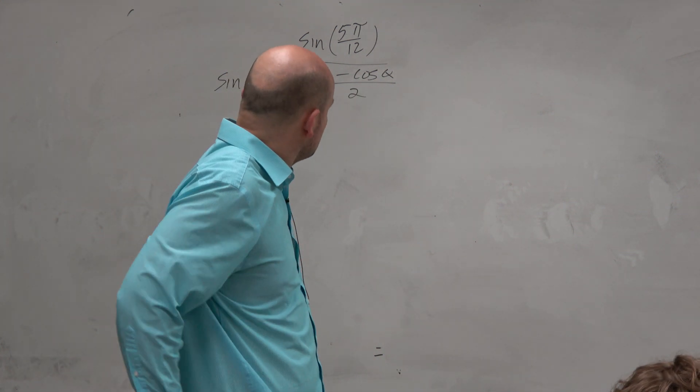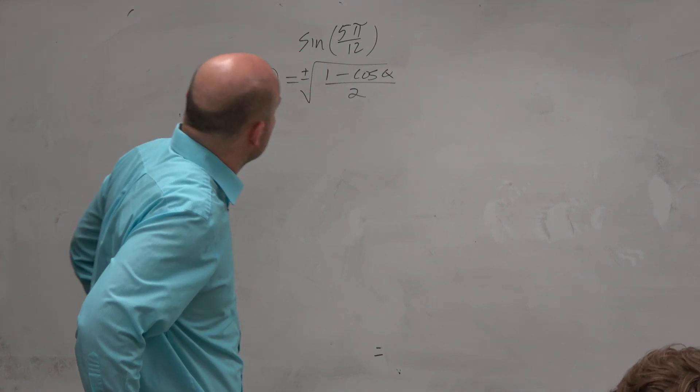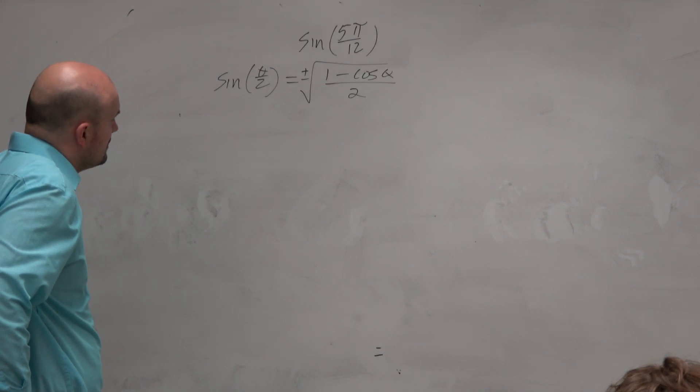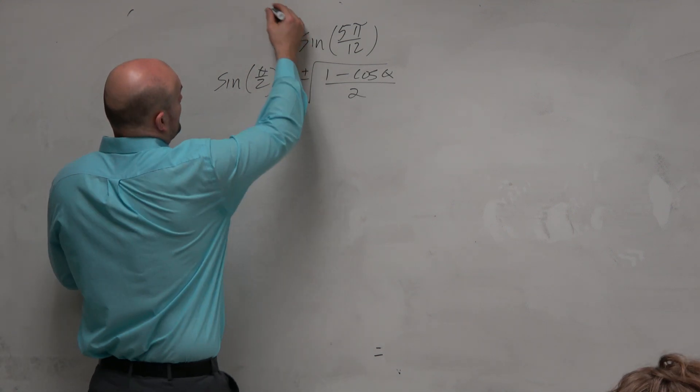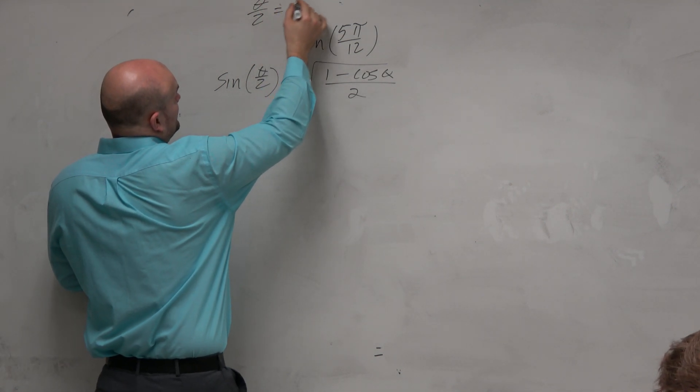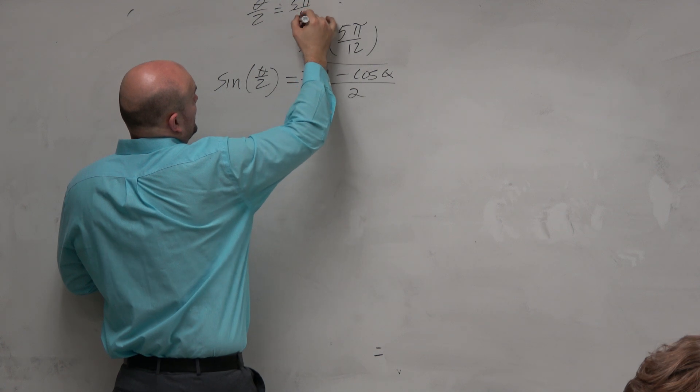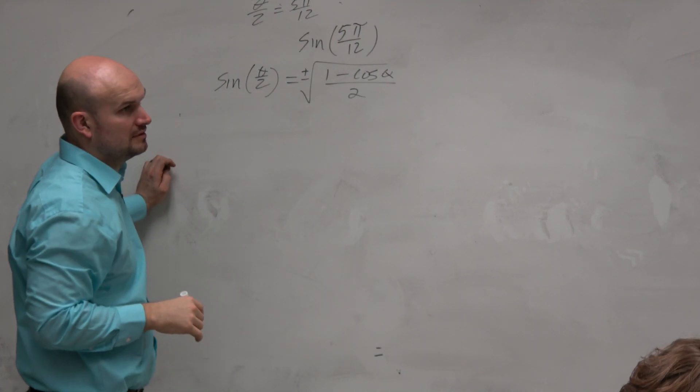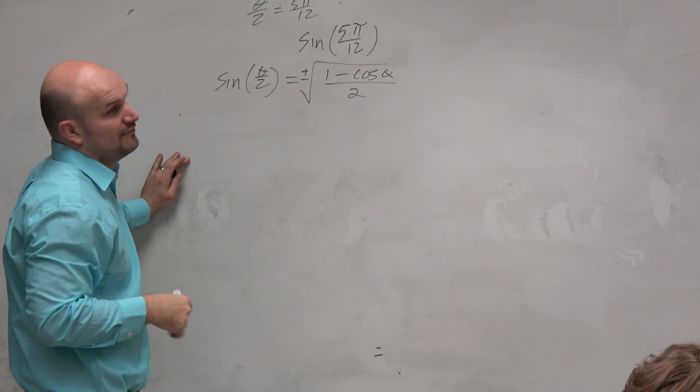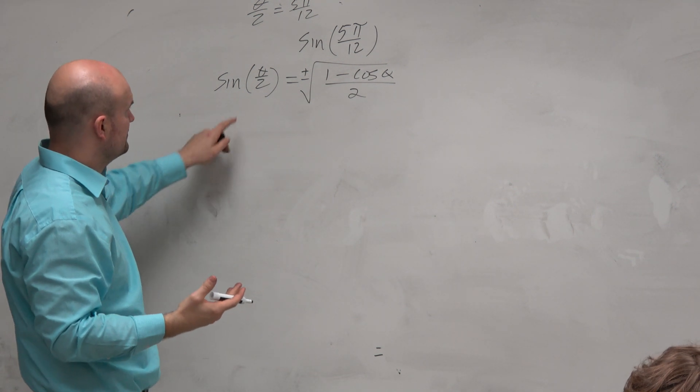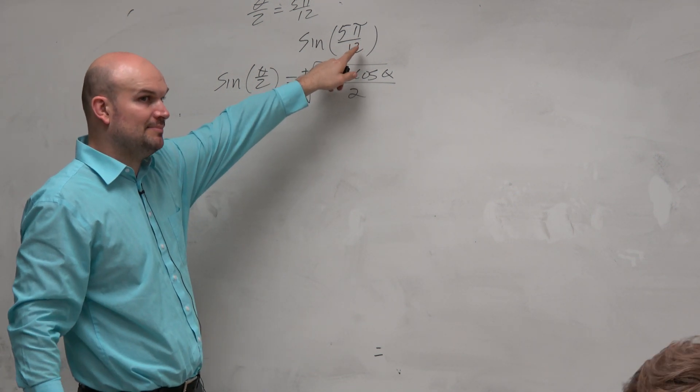Now you might look at this and say, all right. But that means theta divided by 2 equals 5π over 12. If we want to use the half angle identities, then we're going to say, well, let's let this be 5π over 12.